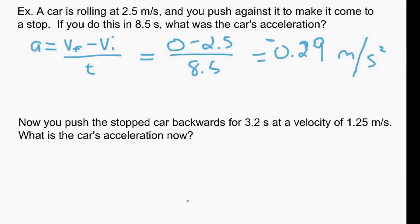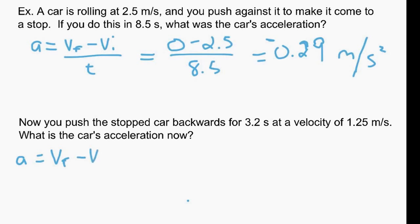So let's do one more that's similar. So this one we have the same car. So the car was rolling towards us. We brought it to a stop. Now we're going to push it backwards at a velocity of 1.25 for 3.2 seconds. So in this case, our final velocity is 1.25 and our initial is 0, right? Because it was initially stopped. We stopped the car.